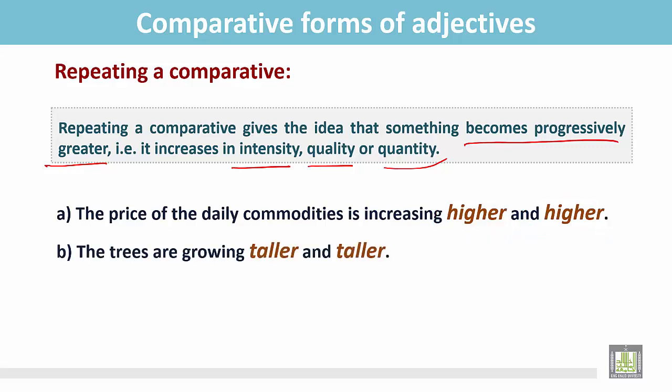Another example. The trees are growing taller and taller. The adjective taller and taller gives the idea that something is becoming progressively greater.